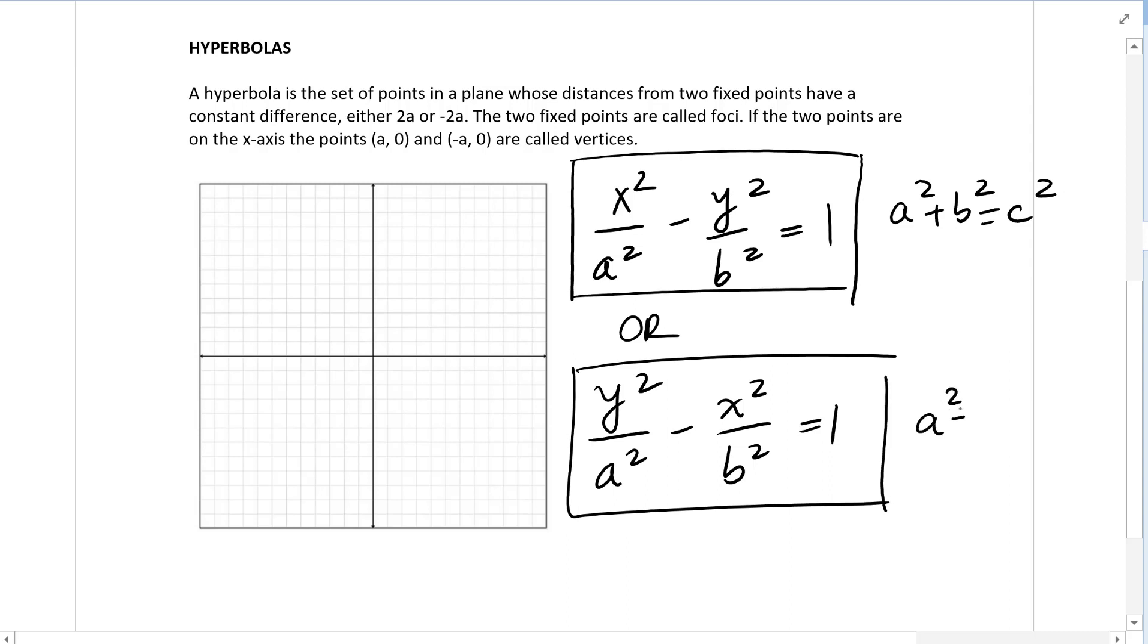So the first equation would have a graph like this, where these are the vertices: vertex 1 and vertex 2, with coordinates (-a,0) and (a,0).